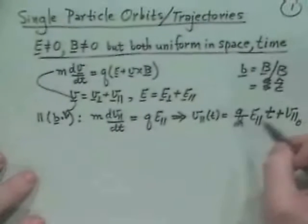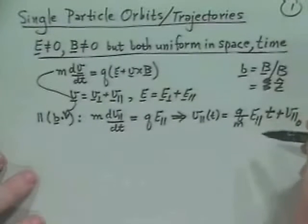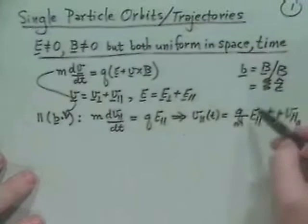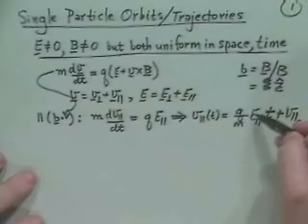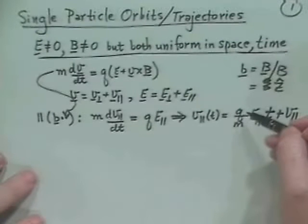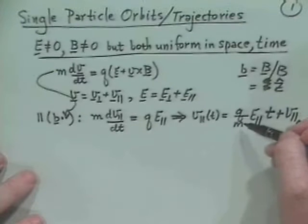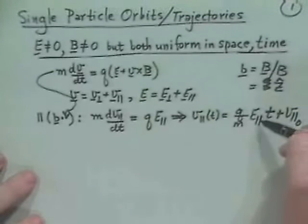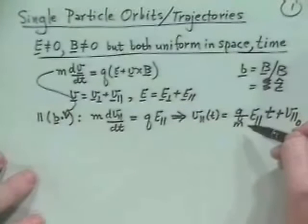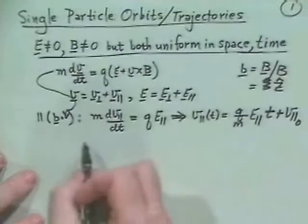Something we'll come back to when discussing instabilities: notice that the parallel velocity goes as E_parallel over M. Ions and electrons have opposite sign but same magnitude of charge, yet their masses differ by a factor of 1836. So if I apply a parallel electric field, I will accelerate electrons because they're so lightweight, but ions are too heavyweight and don't feel much acceleration.